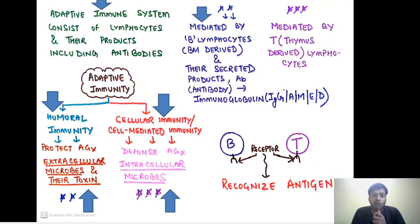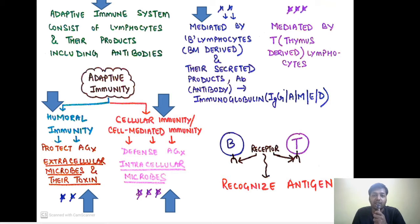Humoral immunity is mediated by B lymphocytes — they are called B lymphocytes because they are derived from the bone marrow. B lymphocytes secrete antibodies, also called immunoglobulins. The short form for immunoglobulin is Ig, and there are five basic types: IgG, IgA, IgM, IgE, and IgD — remembered as GAMED.